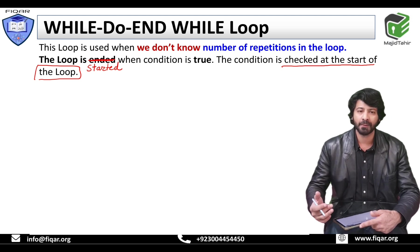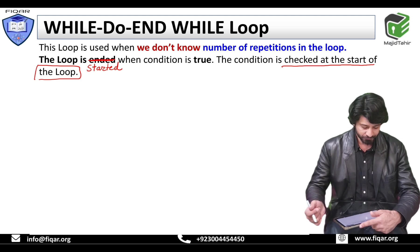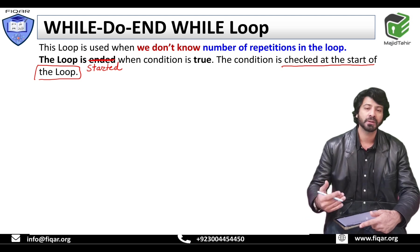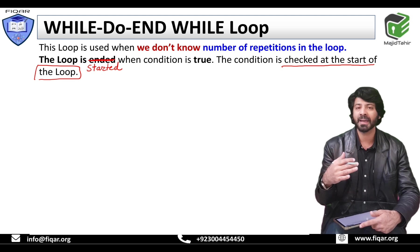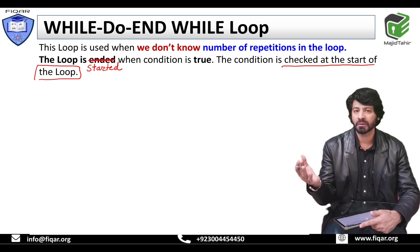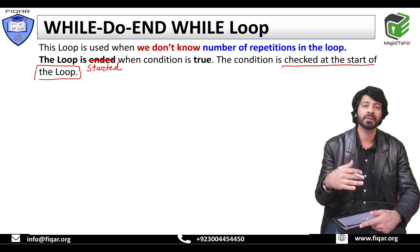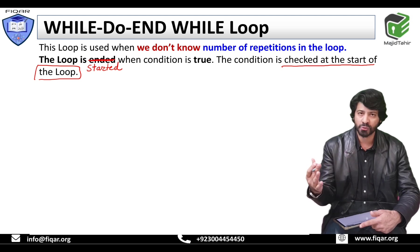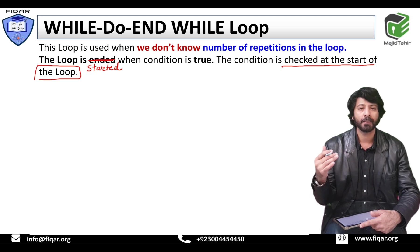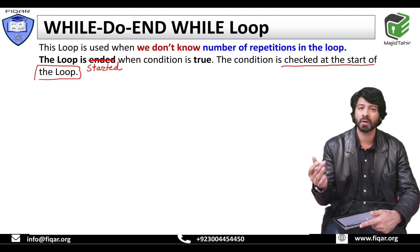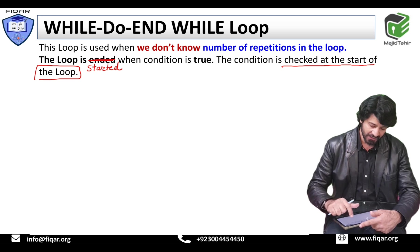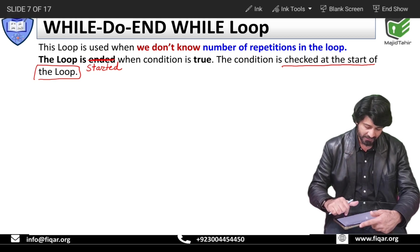In while-to-end-while, or the precondition loop, the loop may never run, or the loop can run many times. We do not know how many times the loop will repeat, but there is a possibility it may never repeat, and there is a possibility it repeats multiple times. Now let's see the code for this.